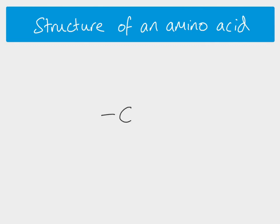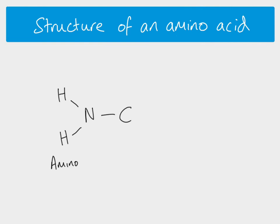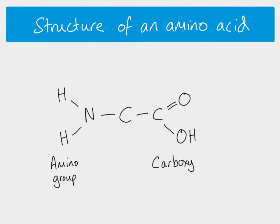The structure of a protein looks a bit like this. First of all you have a central carbon, and that carbon is attached on one side to an NH2 group — that's what we call the amino group — and then on the other side of that central carbon we've got COOH, which is called our carboxyl group. The central carbon then also has two more bonds: it has hydrogen and something called the R group.